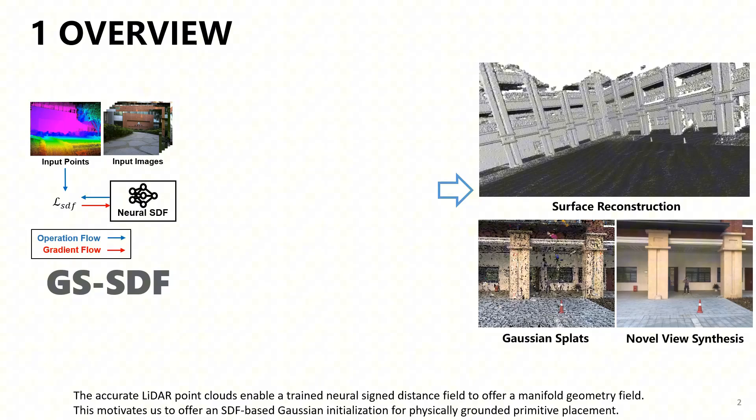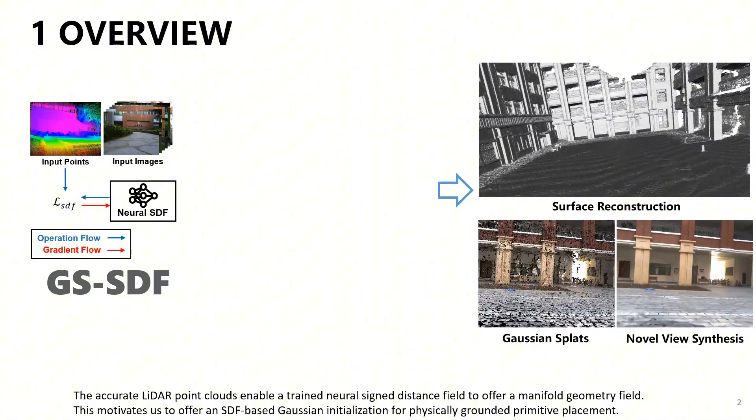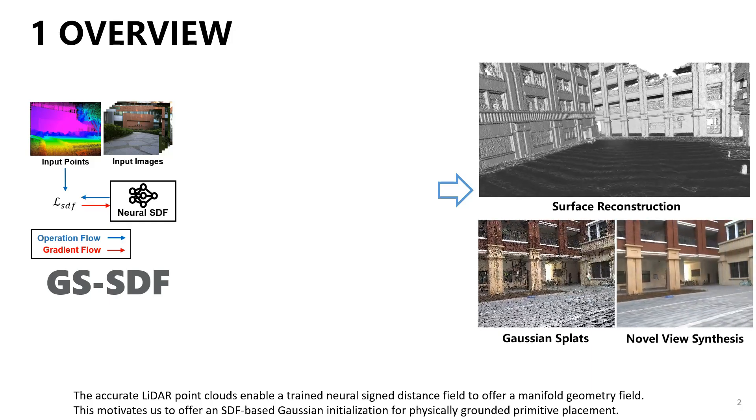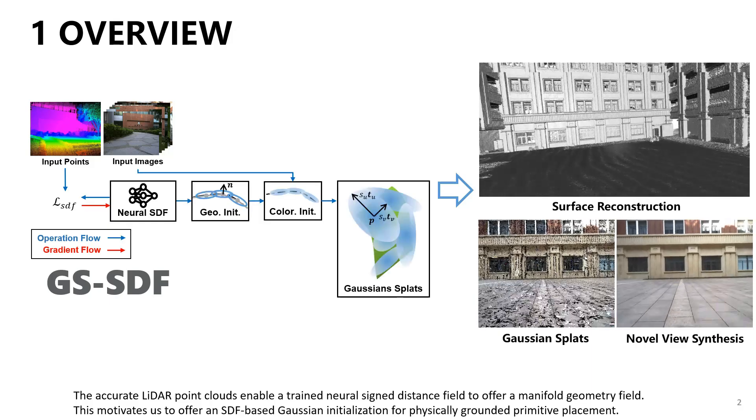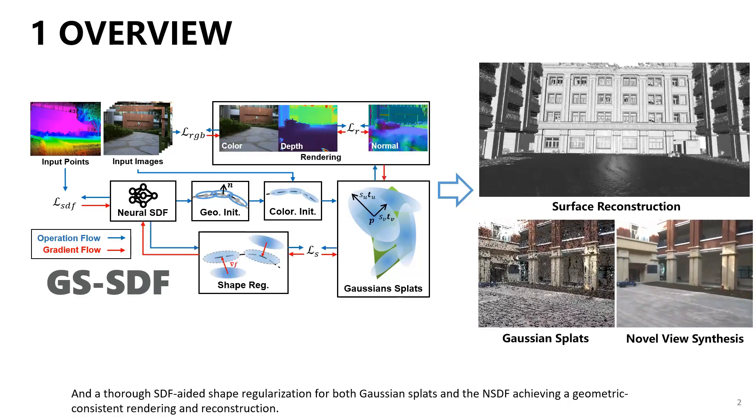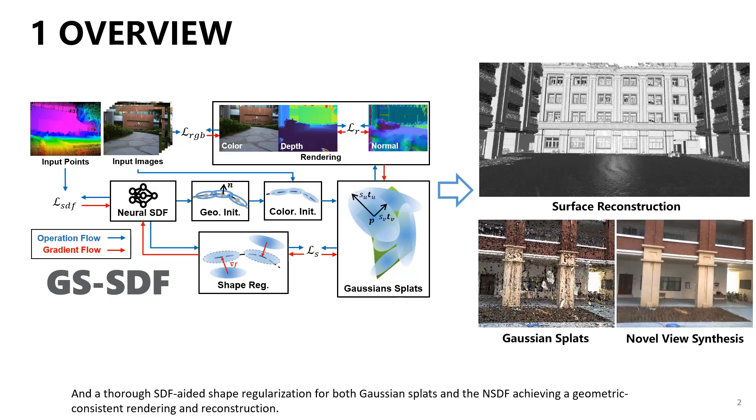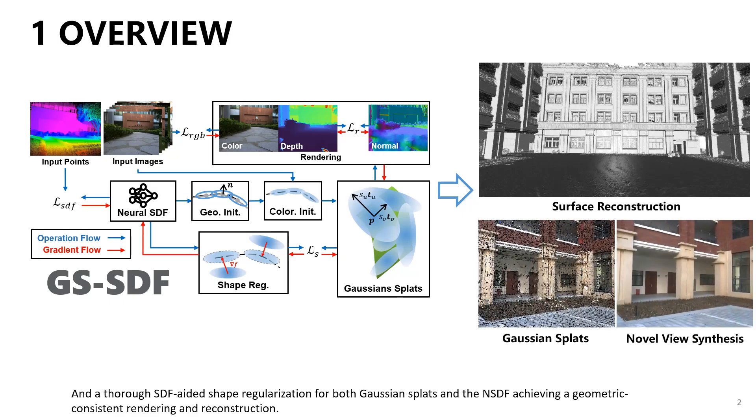The accurate LiDAR point clouds enable a trained neural signed distance field to offer a manifold geometry field. This motivates us to offer an SDF-based Gaussian initialization for physically grounded primitive placement and a thorough SDF-aided shape regularization for both Gaussian splats and the NSDF, achieving geometrically consistent rendering and reconstruction.